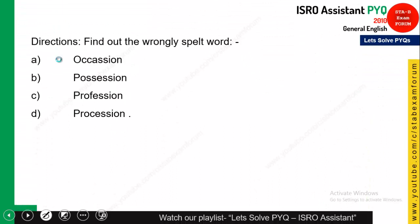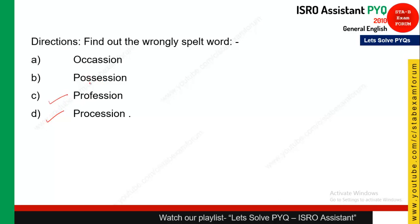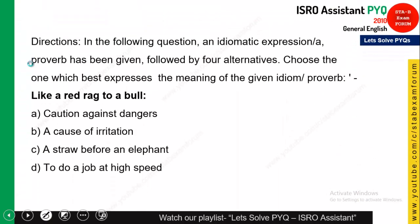This is again from the misspelled word category. Let's see the four words one by one: 'procession' — right; 'profession' — well and good; 'possession' — yes, it is good. 'Occasion' — the spelling of occasion is O-C-C-A-S-I-O-N, not double S. So option A is the correct answer.